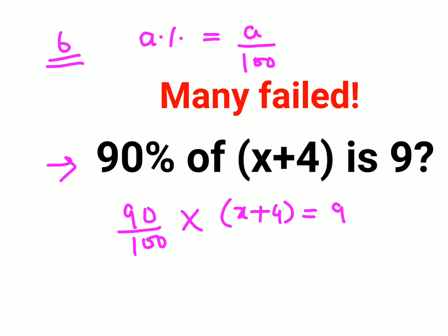Now in order to find the value of x, you will multiply both sides by 100 and divide both sides by 90. Why am I doing that? So that I'll shift maximum numbers on the other side of the equal to.